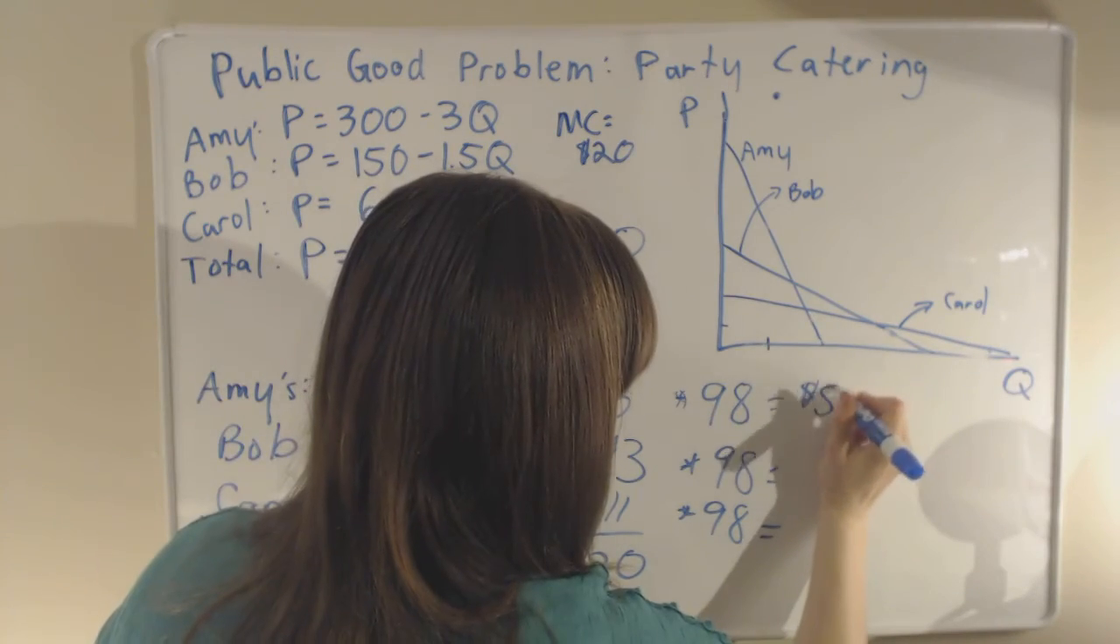And to get the total financial contribution of each person, we're just going to multiply each of these prices times the quantity of people that we're inviting. So at the end of the day, we get Amy contributing $588, Bob contributing $294, and Carol contributing $1,078.